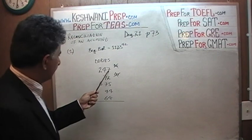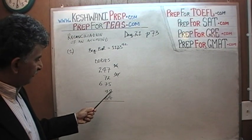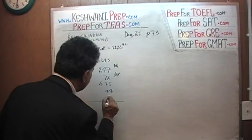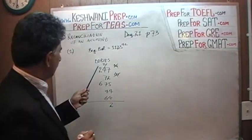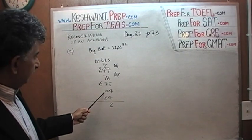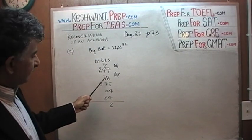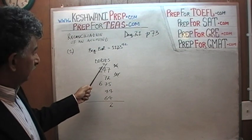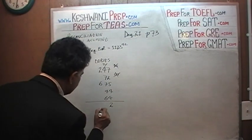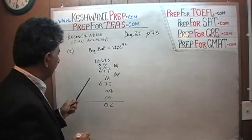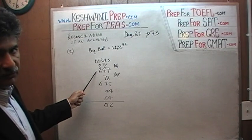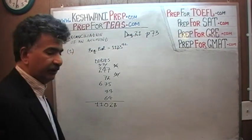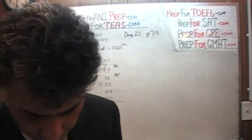Let's add it up. 7 plus 2 is 9; 5 plus 4 is 9; 9 plus 9 is 18; 18 plus 4 is 22 — write 2, carry 2. 6 plus 4 is 10; 7 plus 7 is 14; 14 plus 10 is 24; 24 plus 4 is 28; 28 plus 2 is 30 — write 0, carry 3. 2 plus 3 is 5; 5 plus 6 is 11. So it looks like we have written checks totaling approximately $1,102.